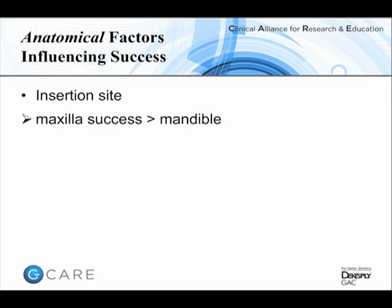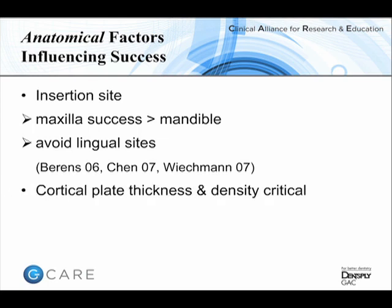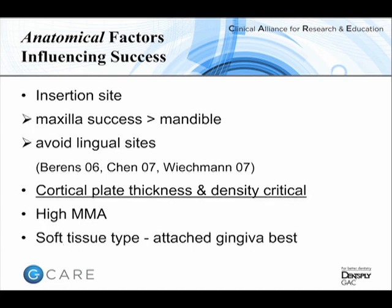In summary, the key anatomical factors are: maxillary success rates are higher than mandibular; we tend to avoid lingual insertions because of low success rates and patient discomfort; and overall, the thickness and density of the cortical plate are the key factors, which can be a problem in high-angle patients where the buccal cortex is thinner. Most insertions are performed through attached gingiva as the best way of guaranteeing soft tissue health and success.